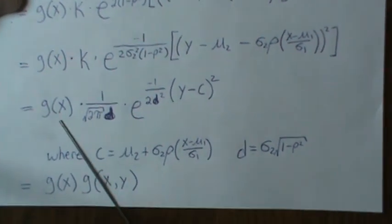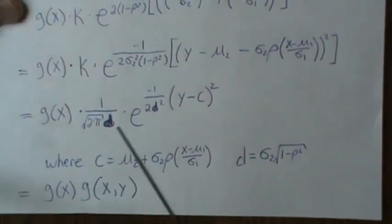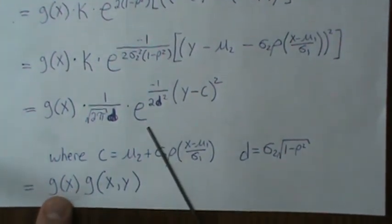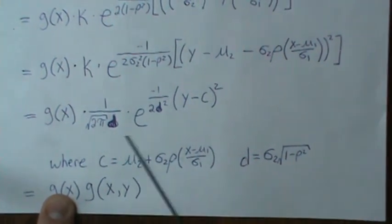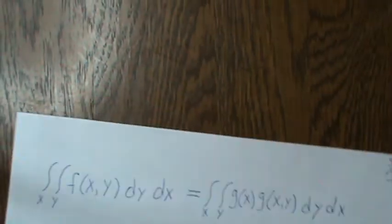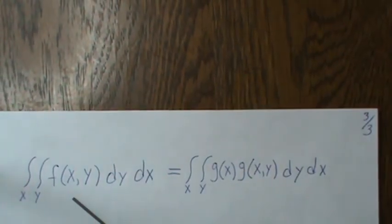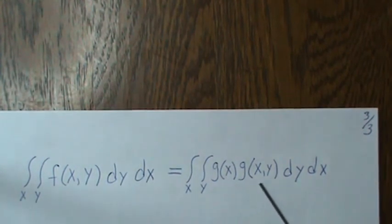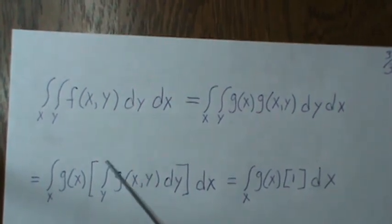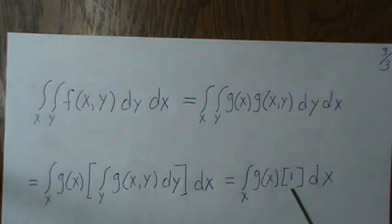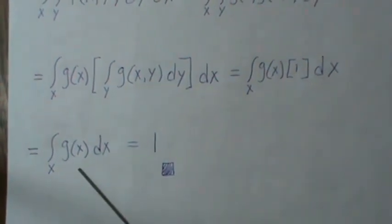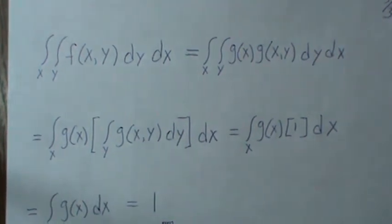We've effectively factored the bivariate normal into the product of two normal-distribution-like pieces. Integrating this inner piece with respect to y gives 1, because it is a normal density. That leaves g of x, which is also a normal distribution, so integrating it over all x also gives 1. Therefore, we have shown that the bivariate normal integrates to 1, which is what we wanted to prove.